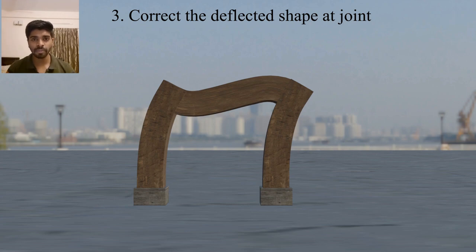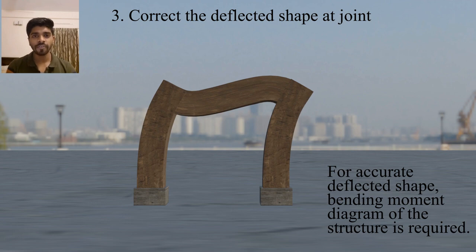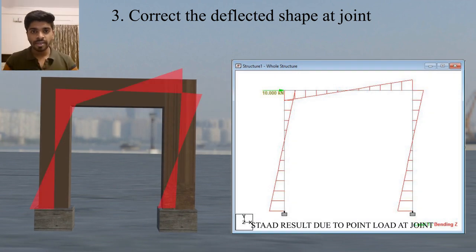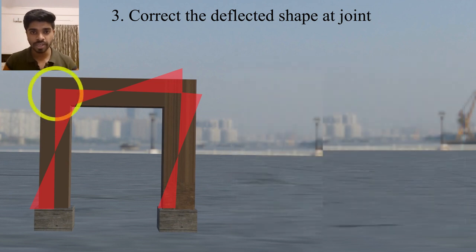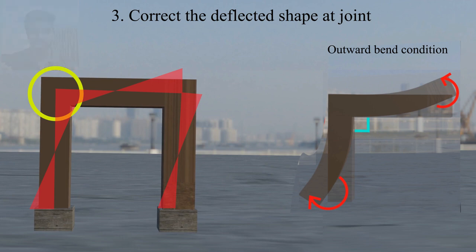But for the correctness of the deflected shape, you should have a bending moment diagram of this structure. So as per the calculation, we will get the bending moment diagram of this structure due to the point load like this. Here we will observe that the left side of the beam column joint, there is a column portion. In that column portion there is a clockwise moment generated, and the beam portion, there is an anticlockwise moment generated. So due to that, this joint is tending to move inward. So this is the condition where this joint is moving outward side.